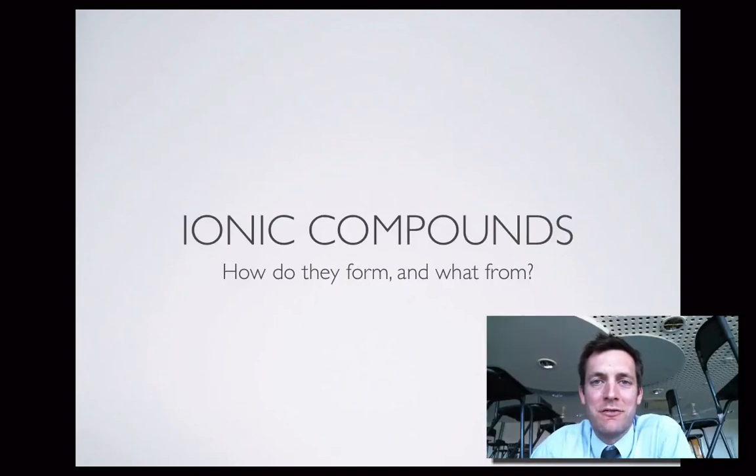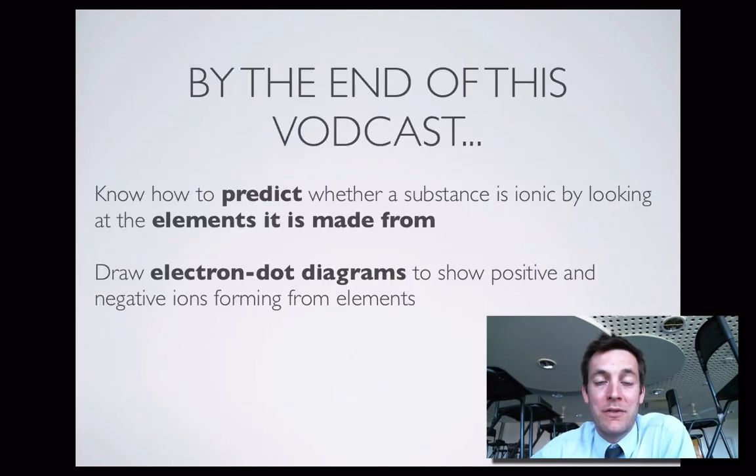Hello there. This is the first of three films about ionic compounds and hopefully you've just been watching not long ago the films about metals because there's some crossover here. Since those films were made the chairs have started closing in. We're under attack here but hopefully we'll make it through to the end of the film and hopefully by the time we get there you'll know how to predict just by looking at the formula or the name of a substance whether it's ionic or not and you'll be able to draw electron dot diagrams to show how the positive and negative ions in an ionic compound form from the elements.